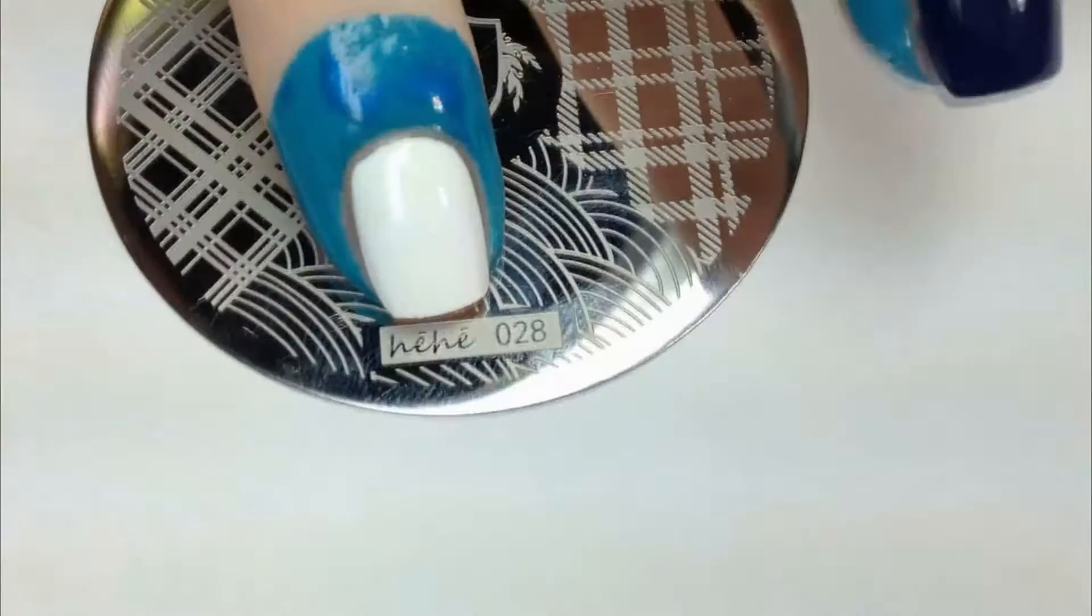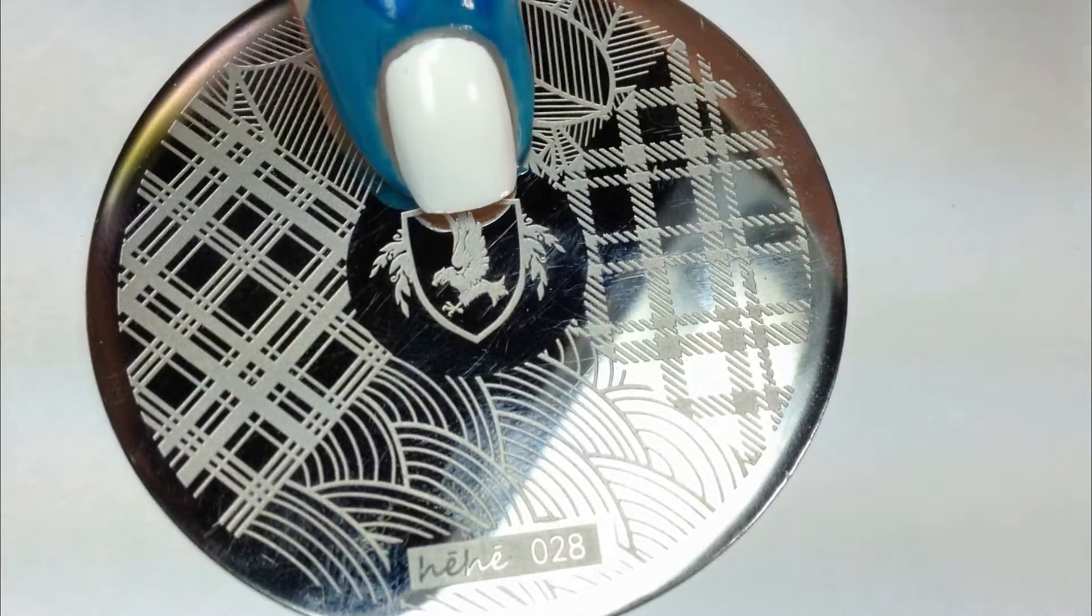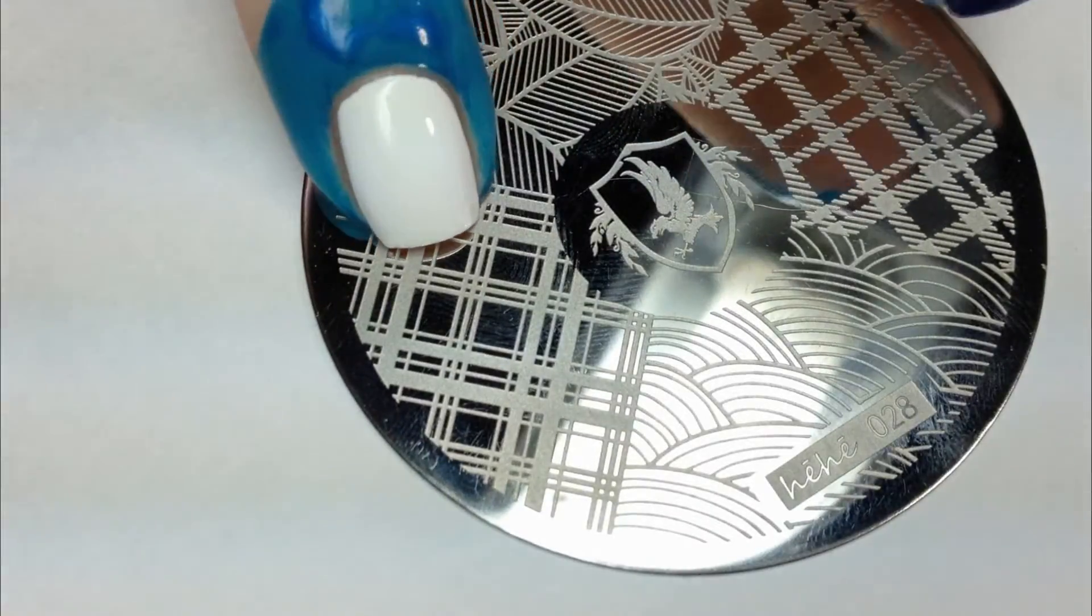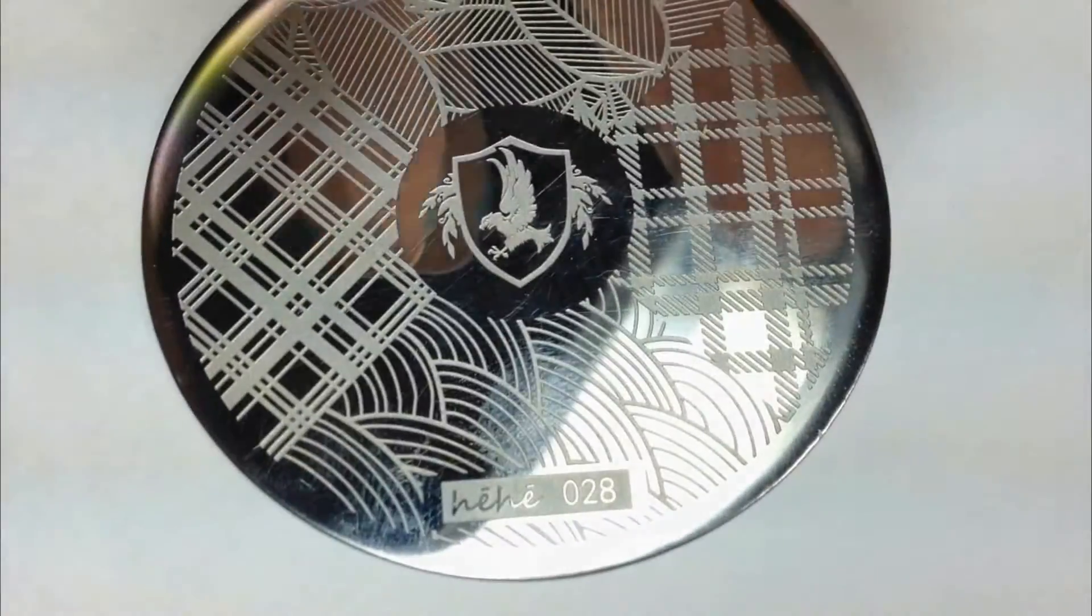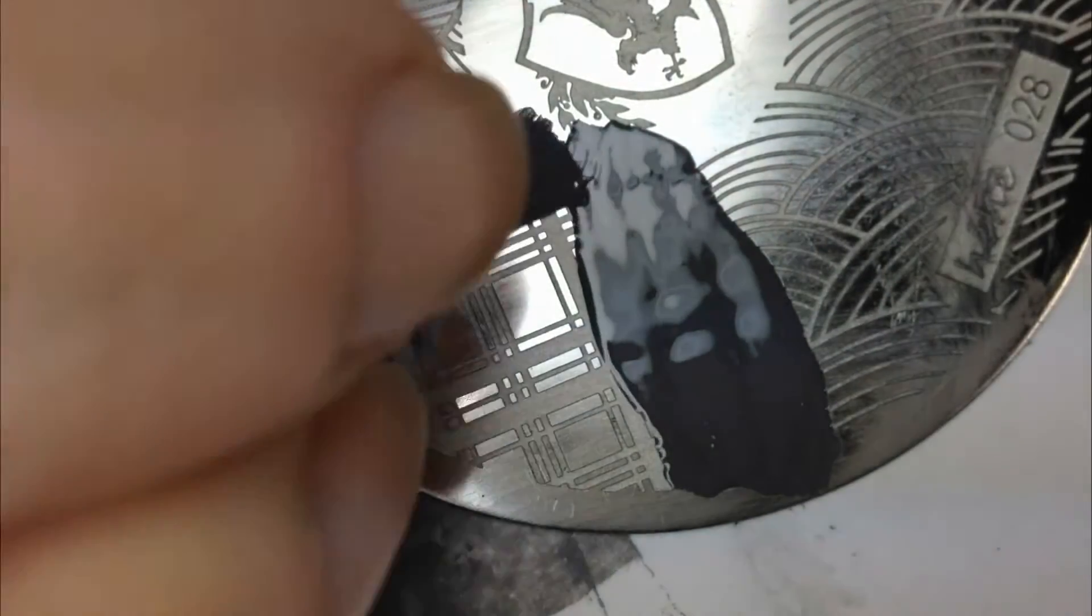Once the latex has dried it's time to start stamping. I'm using stamping plate 28 by Hee Hee. I'm not sure if I'm pronouncing that right. Anyways, so I'm starting out by doing the plaid stripes. For the first layer of stripes I use a dark gray stamping polish.